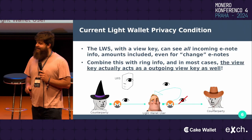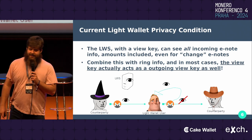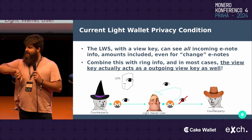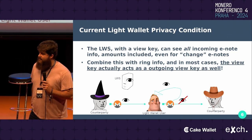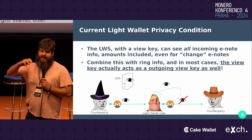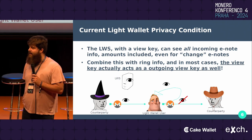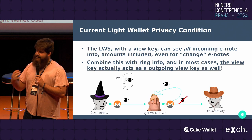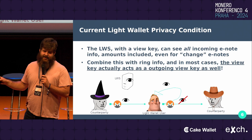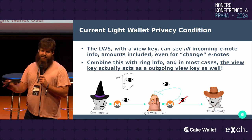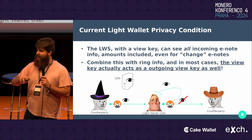Why does it suck? As you can see in this diagram, whenever you give your view key to a LightWallet server, they can see all incoming e-note information, amounts included, even for your change e-notes. Combining it with ring info — and Justin Berman did a really good talk about this at the previous MoneroCon — view keys, while they're only supposed to see incoming, about 95% of the time actually see all transaction details.